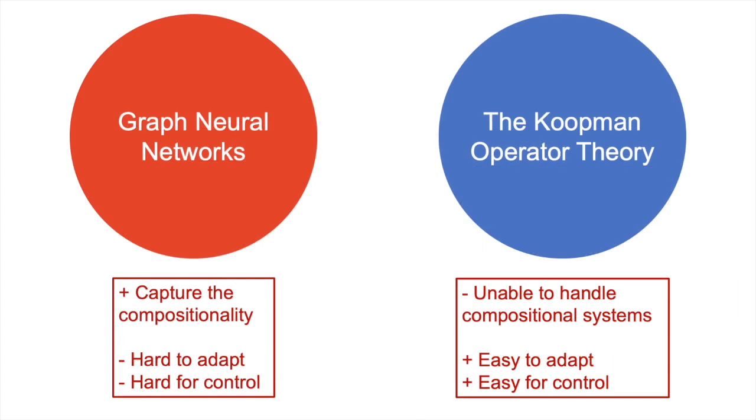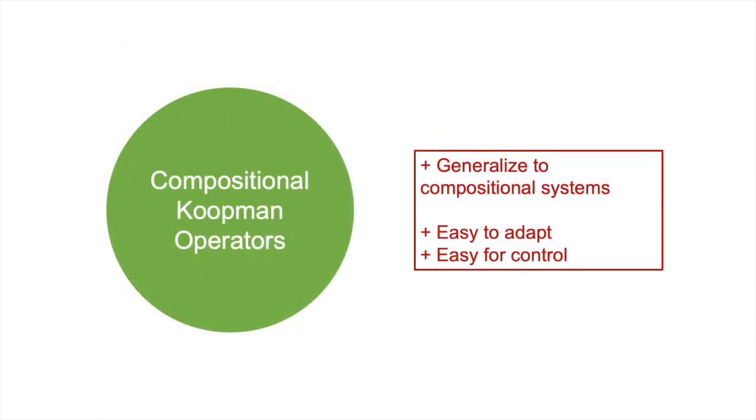As a result, both directions has its own pros and cons. In this work, we combine the graph neural networks and the Koopman operator theory, taking the best of both worlds and propose the compositional Koopman operators. Our model can generalize to systems of different configurations and different numbers of components. Its internal linear structure also allows it to quickly adapt to systems of unknown physical parameters and enable efficient control synthesis.